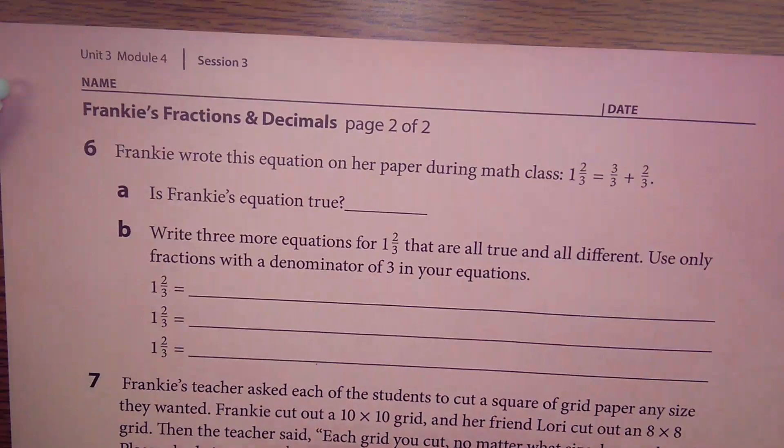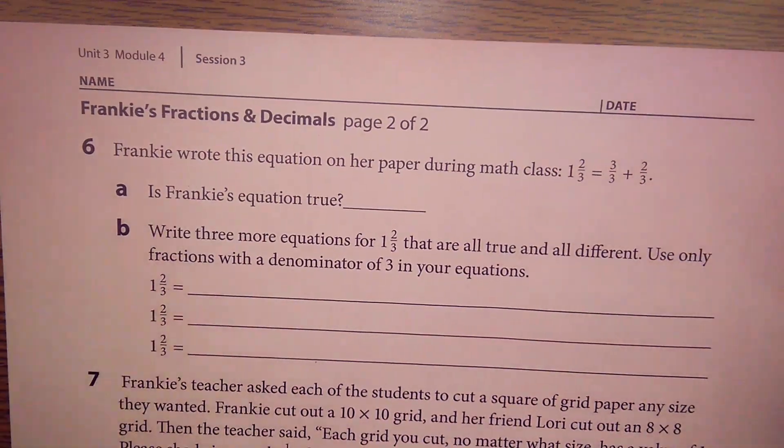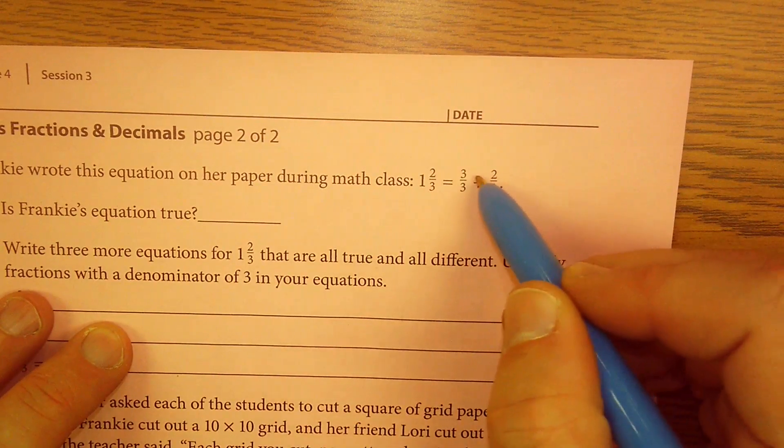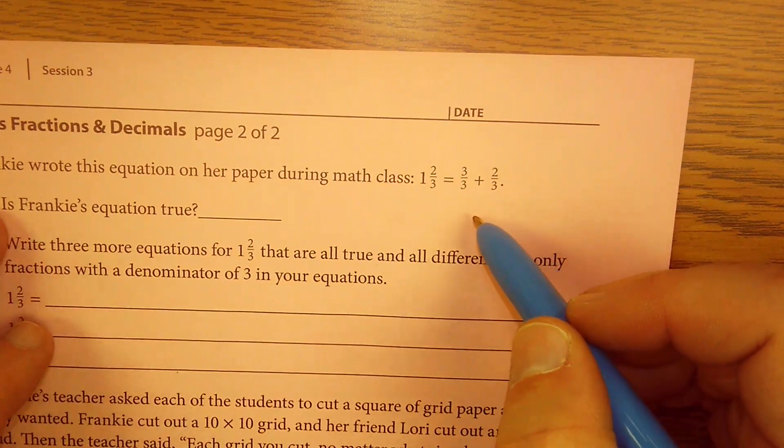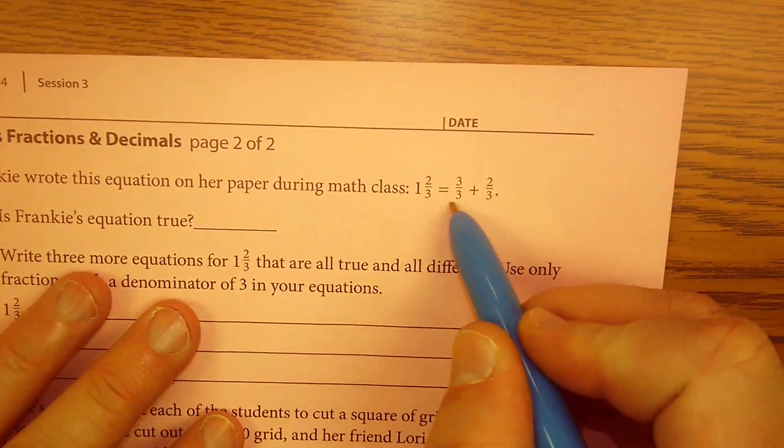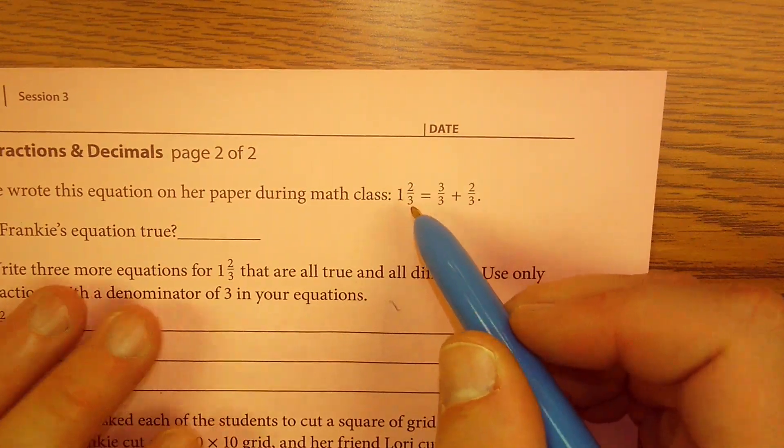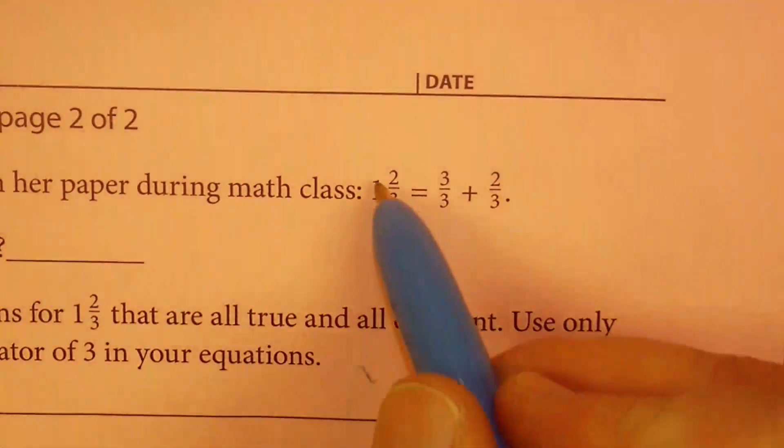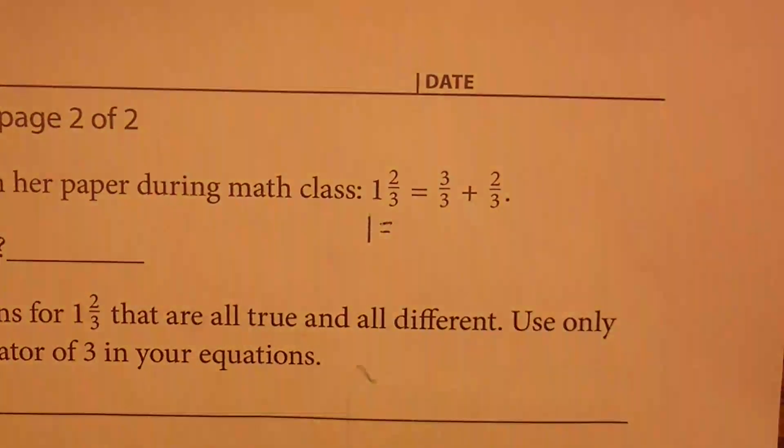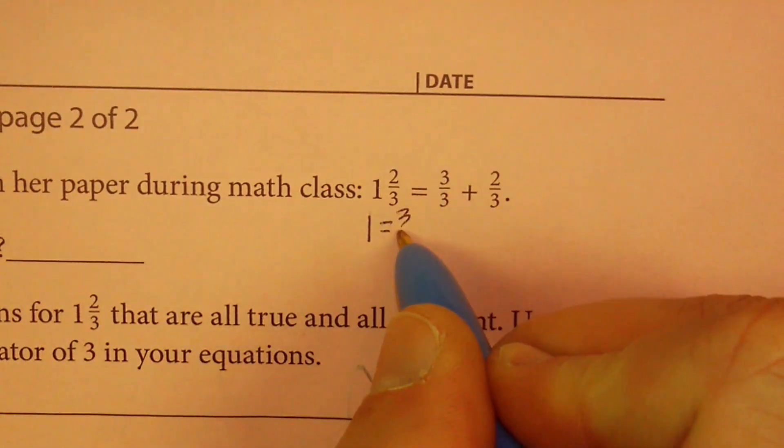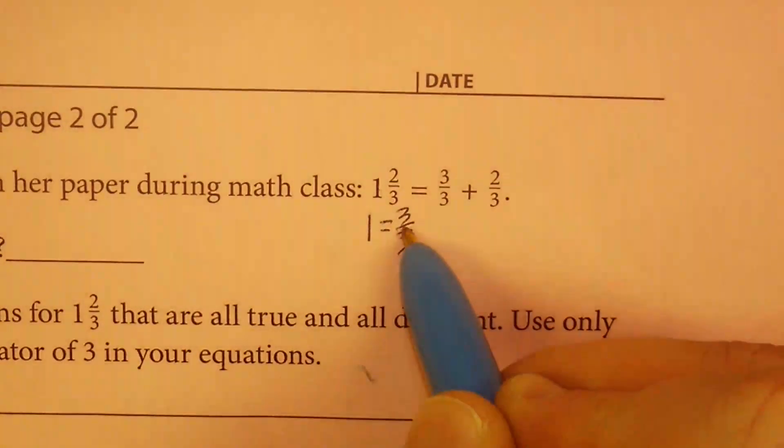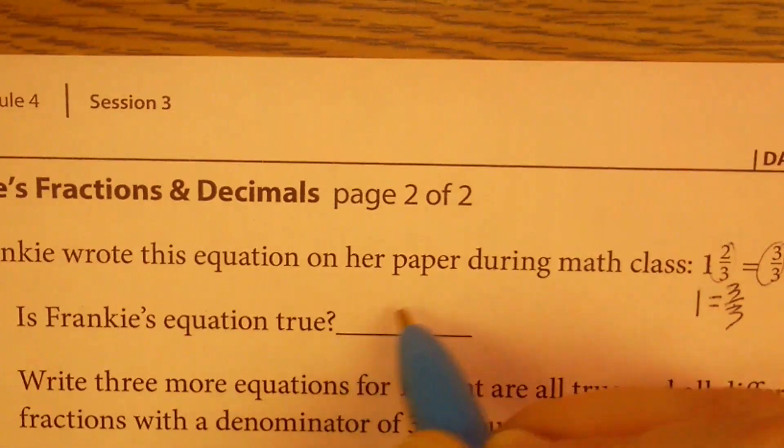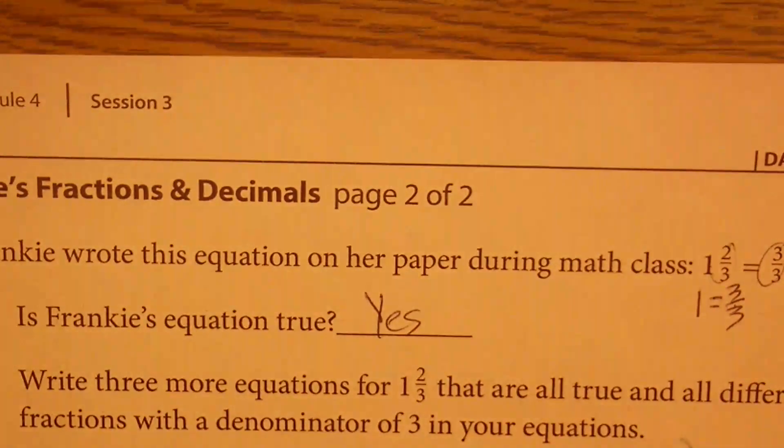There we go. So Frankie wrote this equation on her paper during math class. I didn't know Frankie was a girl until just now. One and two-thirds equals three-thirds plus two-thirds. Is Frankie's equation true? Well, it looks like she tried to break this number apart, didn't she? I'm going to try to zoom in without coming out of focus, but let's think about this. What is number one? One is the same as what if you want to break it into thirds? That would be three-thirds, isn't it? So one is three-thirds. So this part's good. And then is there a two-thirds and a two-thirds? Yes, there is. So I would agree. That equation is true.